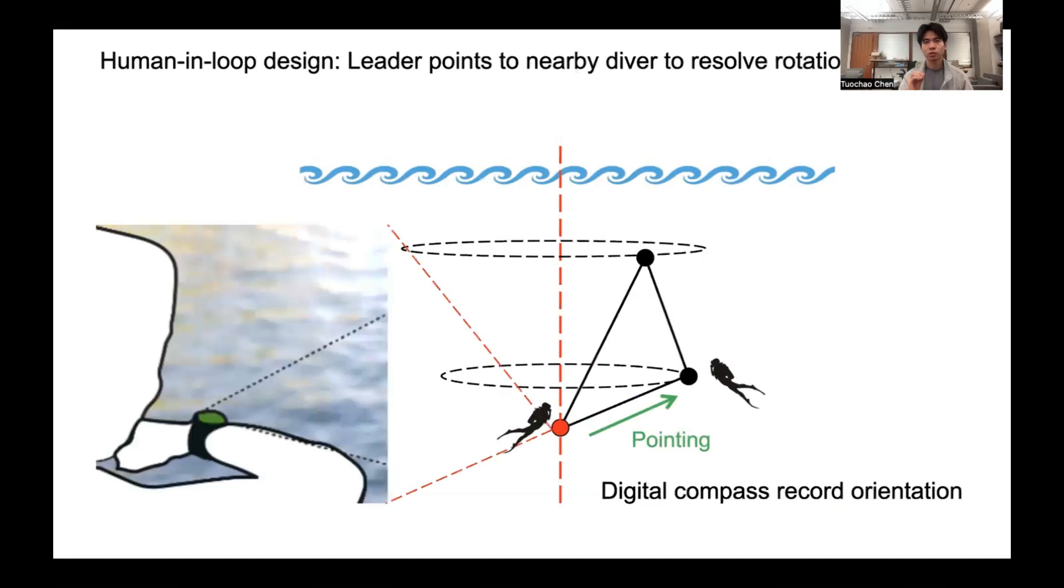To resolve this, we introduce a human-in-the-loop solution. Specifically, the leader can point their smart device to a nearby diver, and the digital compass can record its current orientation. Then we can rotate the entire topology until the corresponding edge aligns with the pointing line. So by pointing to just one diver, we can resolve the rotation ambiguity.